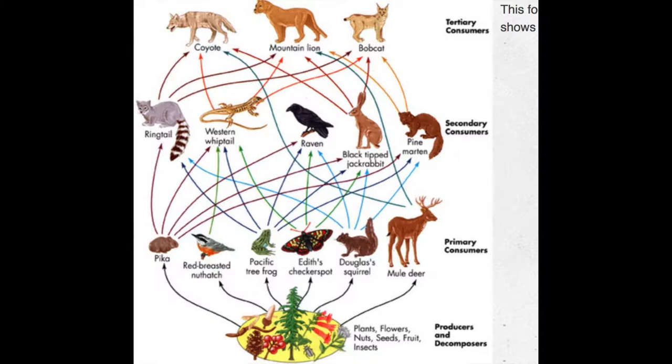The tertiary consumer coyote will then eat the ring-tailed lemur. One producer and consumer relationship that exists is the mule deer and the flower. The mule deer is the primary consumer that eats the producer, the flower.